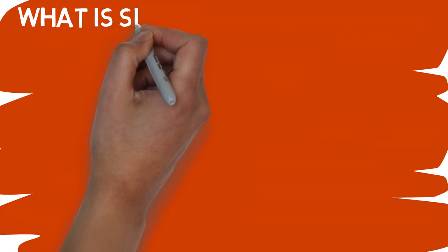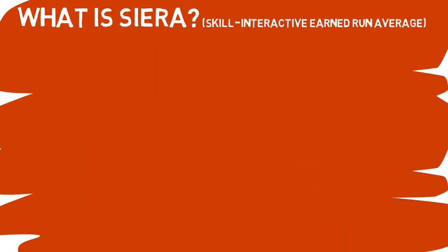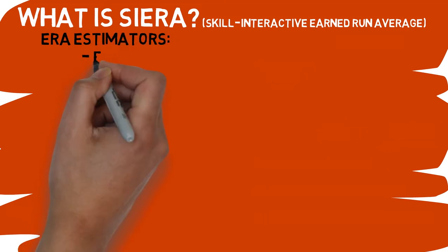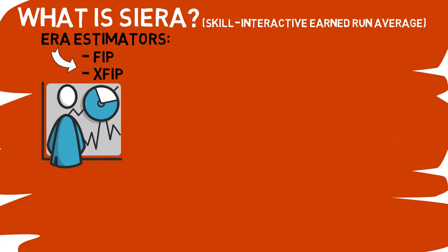To begin with, let's cover what Sierra is. Sierra stands for Skill Interactive Earned Run Average. It is similar to some of the ERA estimate stats we've covered in the past, like FIP and xFIP, in the sense that it uses tons of historical data to eliminate the factors out of a pitcher's control. This gives us a better understanding of how good or bad a pitcher is, without taking into account things like the way the defense plays behind him. I dive deep into why this is so important in the video covering FIP that I did on the channel a few months back, so if you want to hear more about these kinds of stats, definitely check that one out.